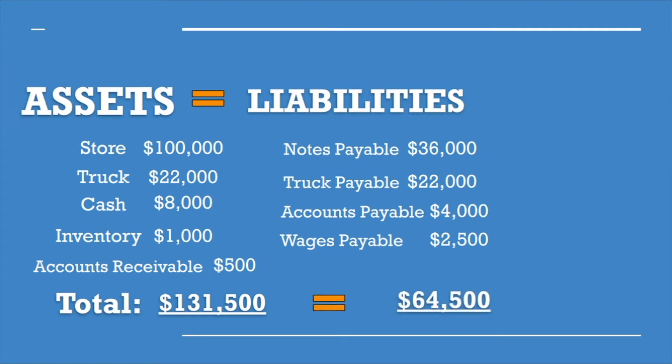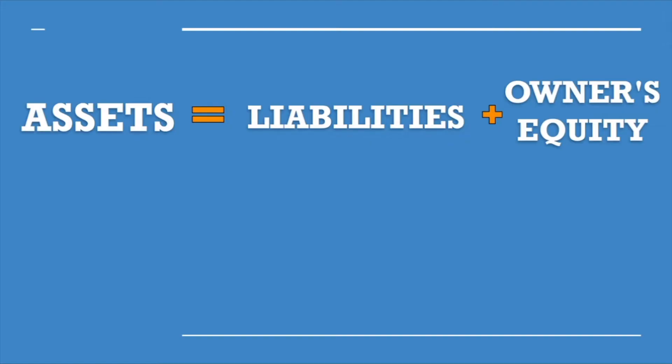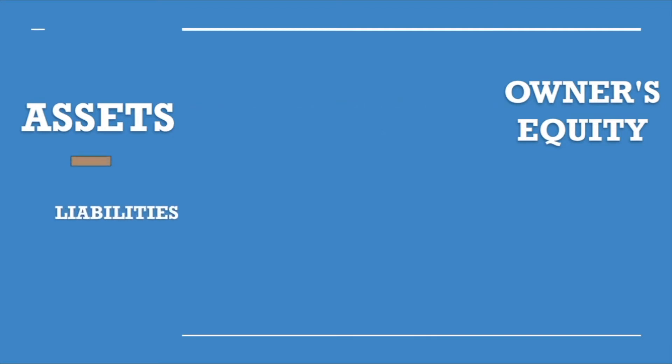Liabilities total $64,500. So we have $131,500 in assets and $64,500 in liabilities. You're probably wondering why these don't equal — well, in the accounting equation we have something called owner's equity. It's the remaining amount after liabilities are subtracted from assets.